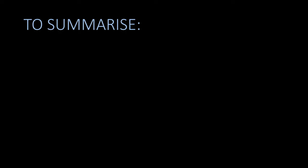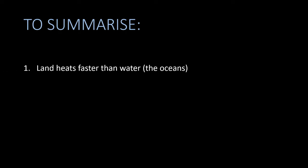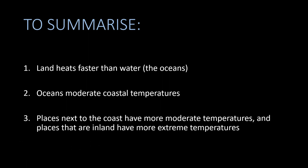Before we end, let's quickly summarize what we have learned. Firstly, we learned that land warms faster than water because land is solid and opaque, and water is transparent, allowing for deeper heating and deeper heat storage. Secondly, we learned that oceans moderate coastal temperatures because of this heating difference.